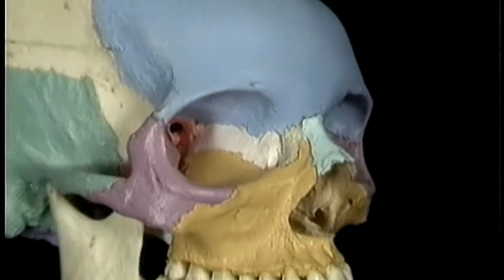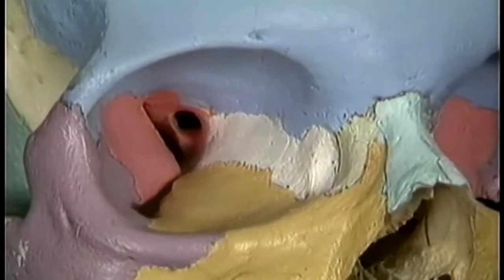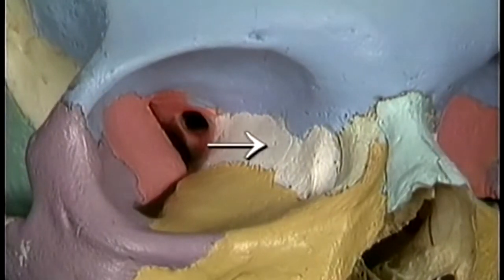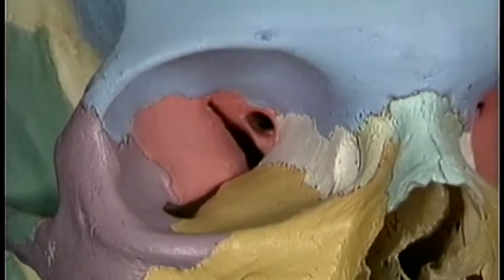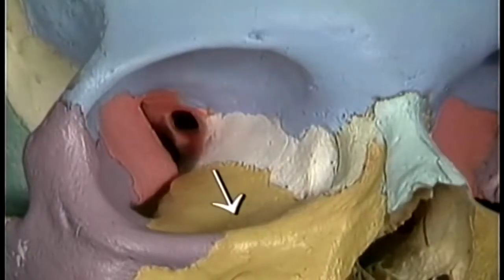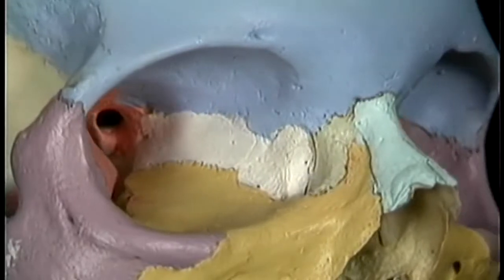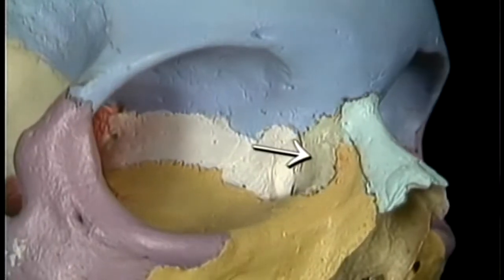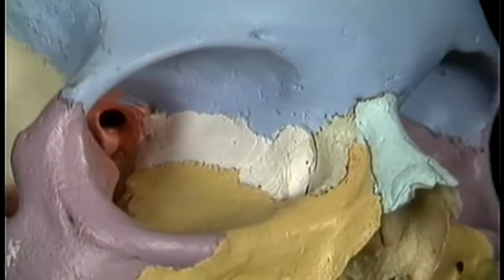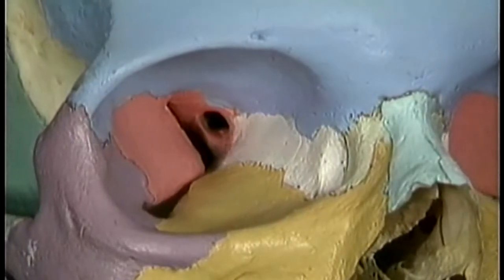As we saw in tape 4, several bones are involved in forming the orbit. Starting medially, this is part of the ethmoid bone, this is the underside of the frontal bone, this is the zygomatic bone, this is part of the maxilla, so is this, and this is the lacrimal bone. Back here are the greater and lesser wings of the sphenoid bone.